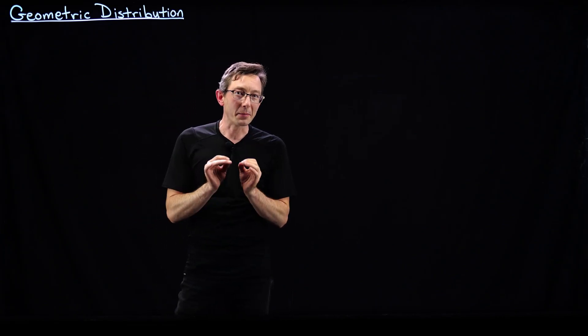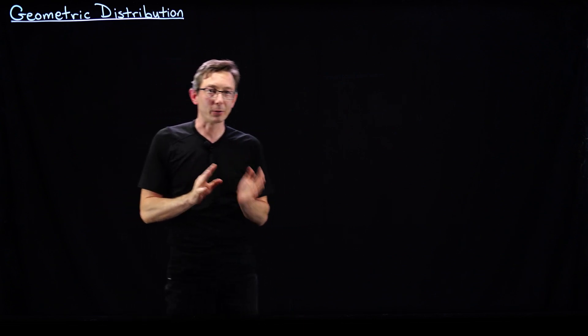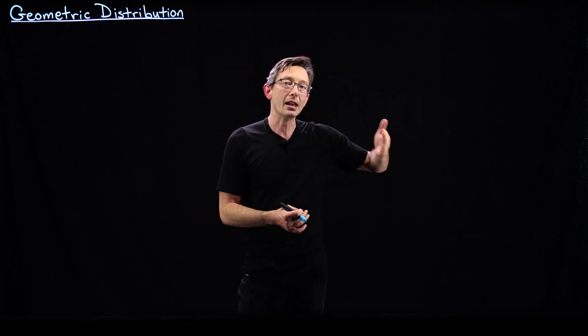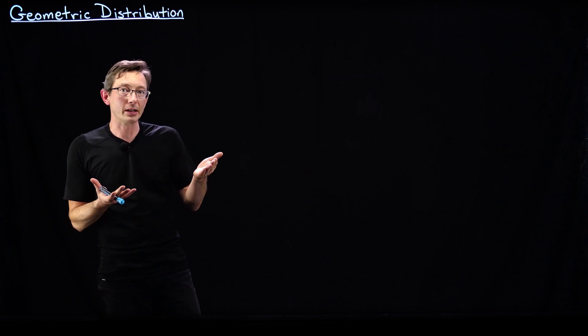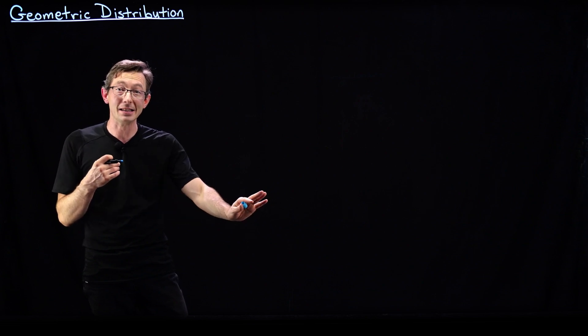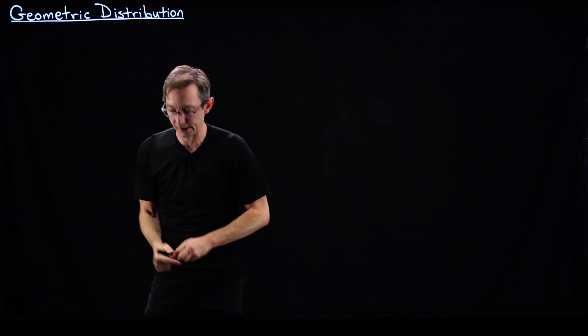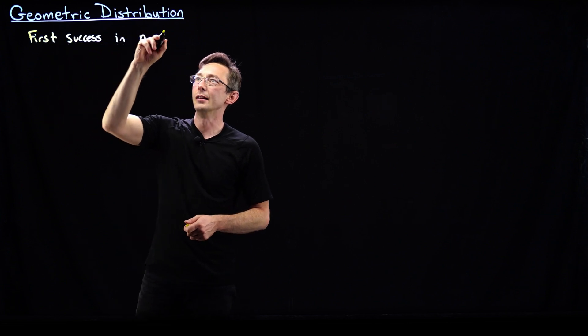Welcome back. Today I'm going to tell you about a neat distribution called the geometric distribution. This is a fun random variable that's geometrically distributed, where we are trying to see what is the first success in n random trials. So imagine I'm flipping a coin — what is the probability distribution of the first heads being on the nth coin flip? This is all about the first success in n trials.